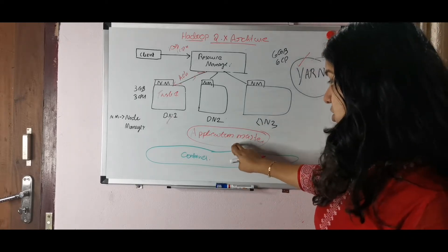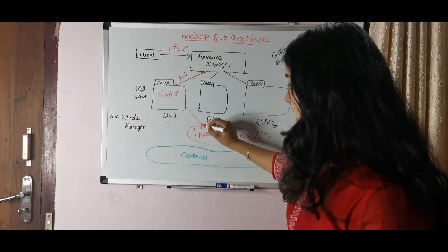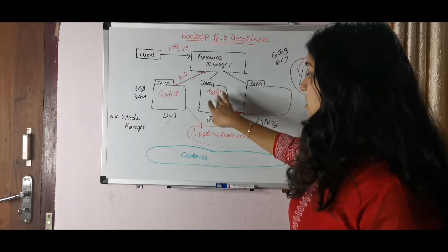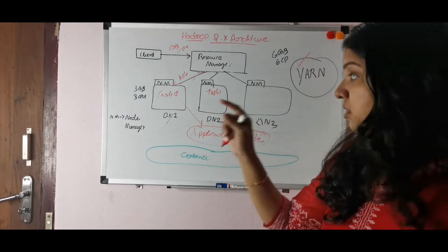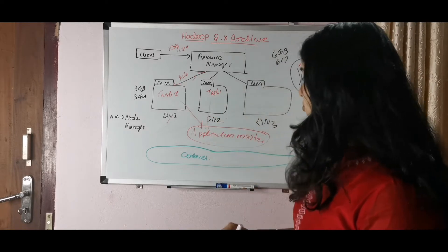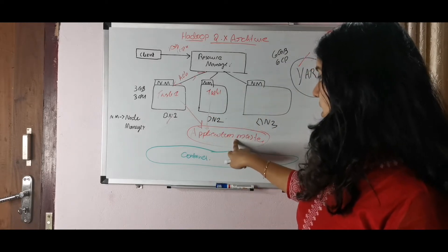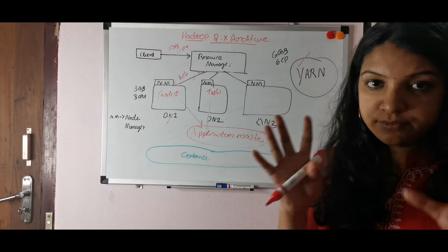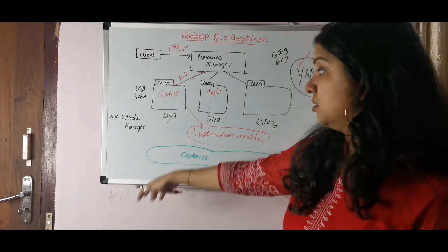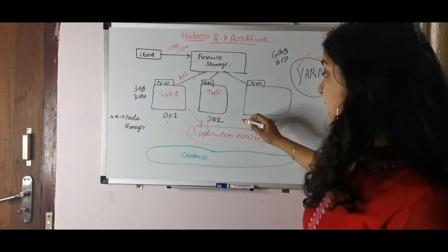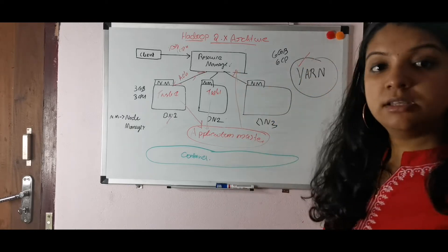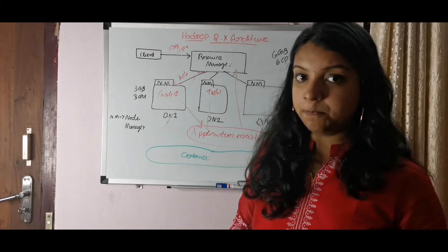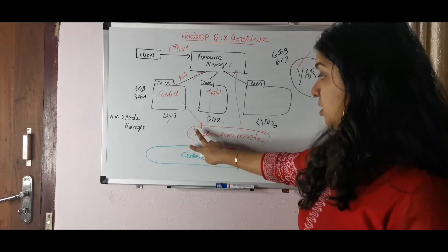This is where the Application Master becomes important. The Application Master connects tasks running on separate Data Nodes — it's one task split across multiple nodes. The Application Master sits in the middle, takes resources from both nodes, and updates the status to the Resource Manager on whether the task is completed or still processing.